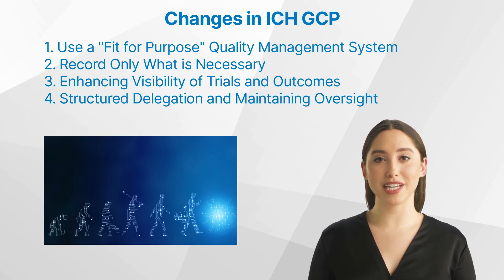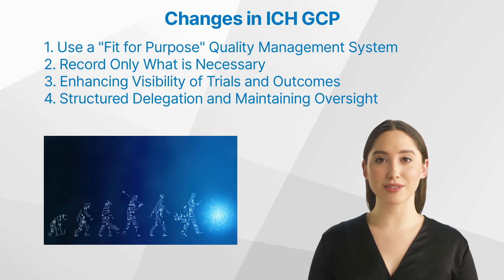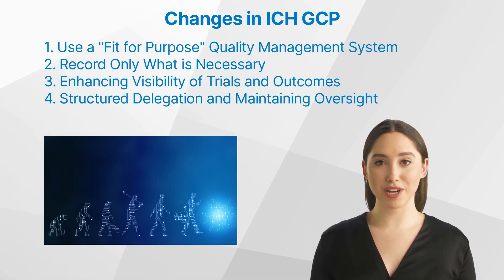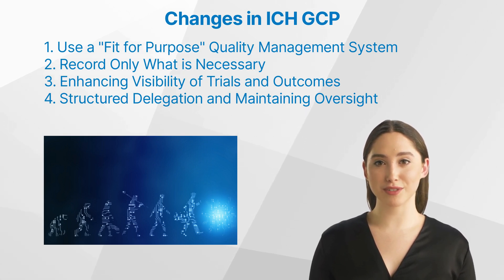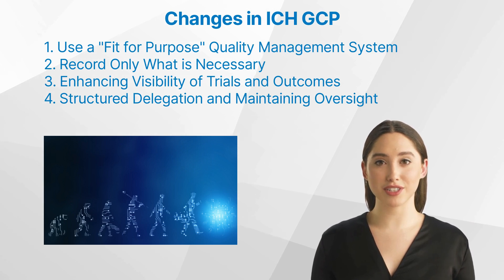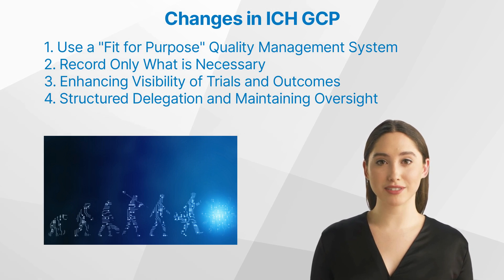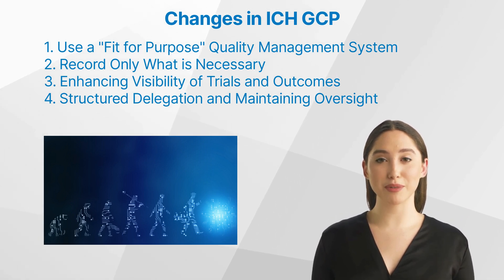1. Use a fit-for-purpose quality management system. Under the upcoming revision, the focus of the quality management system in clinical trials will be on being fit-for-purpose. While systems to control trial quality were already in place, the emphasis will now be on factors critical to the quality of the trial. The protection of participants and the maintenance of result reliability will take center stage. This change sends a clear message to trial sponsors to streamline control measures that do not contribute to subject protection or data integrity. By reducing unnecessary burdens, sponsors can enhance trial efficiency without compromising participant safety.